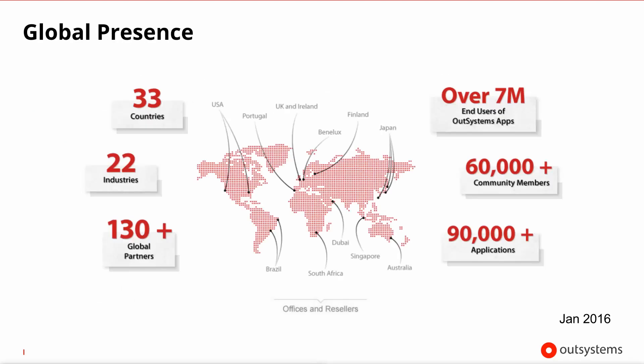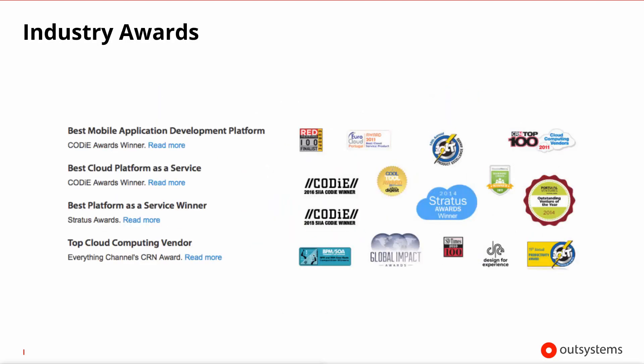OutSystems has existed since 2001 and as you can see from this slide, its platform is being used extensively worldwide by clients of all sizes and in all sorts of industries. Throughout its history, OutSystems has received numerous awards both for the quality of the technology and its ability to continuously deliver innovation for the companies that develop on top of our platform.